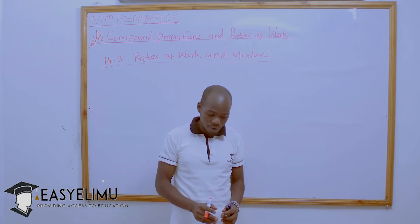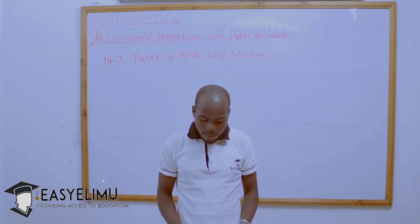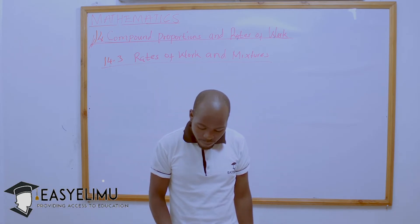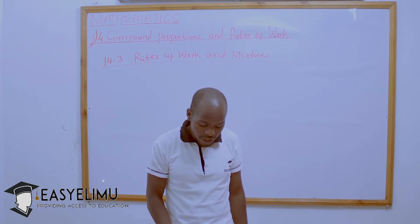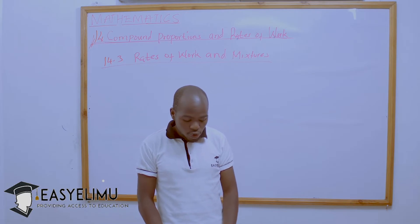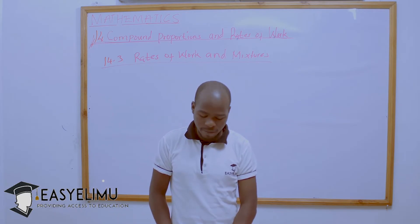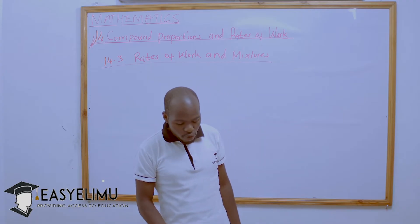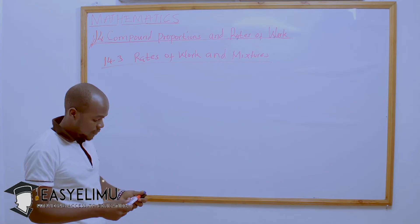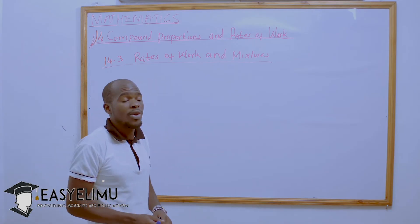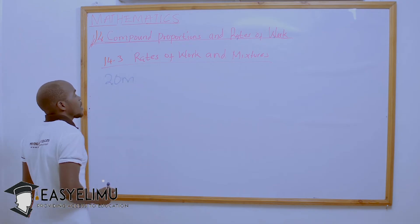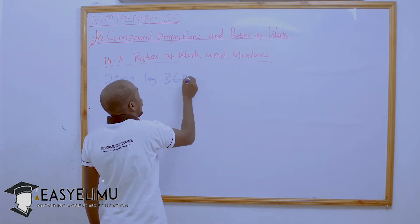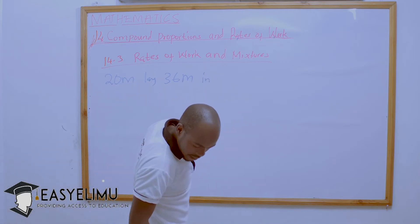First example: 20 men can lay 36 metres of pipe in 8 hours. How long would 25 men take to lay 54 metres of pipe? We identify what we have been told: 20 men can lay 36 metres of pipe in 8 hours, and we need to find how long 25 men would take to lay 54 metres of pipe.